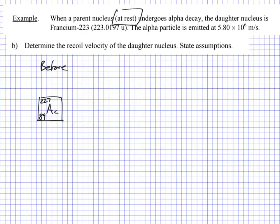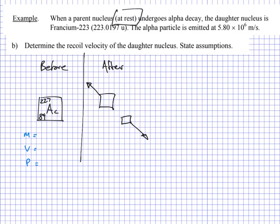Before the decay, Actinium-227 has a mass, a velocity of zero, and therefore zero momentum. After the nuclear decay, one piece flies off in one direction and another piece flies off in the exact opposite direction. From the previous part, we know we have Franzium-223 (atomic number 87) and an alpha particle (atomic number 2, nucleon number 4).